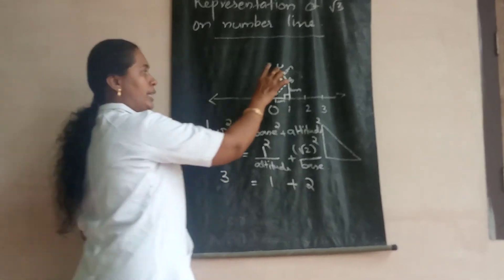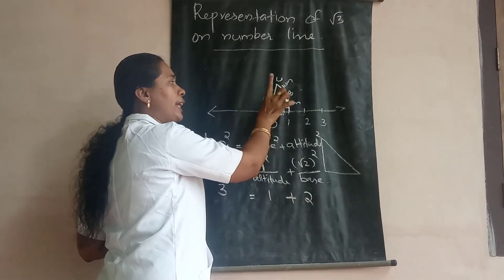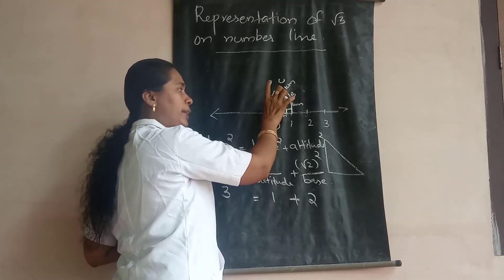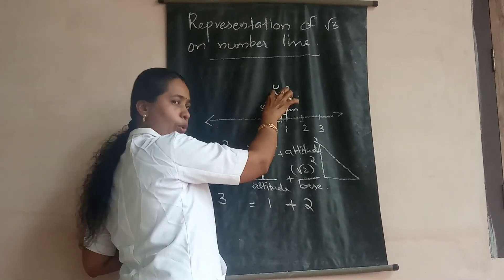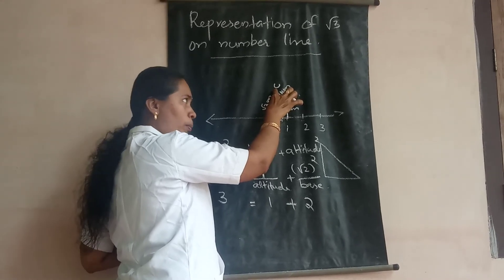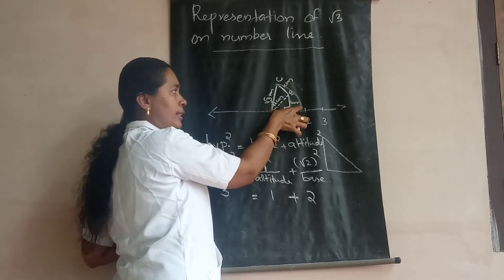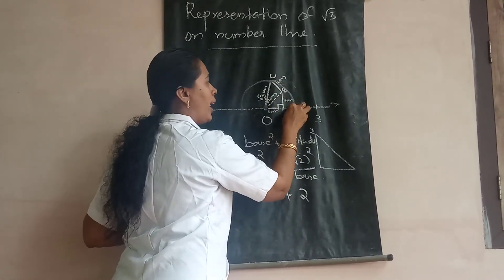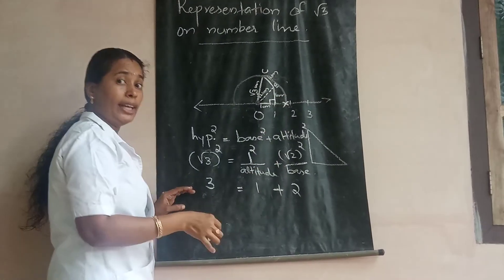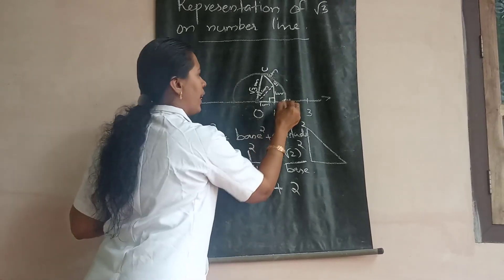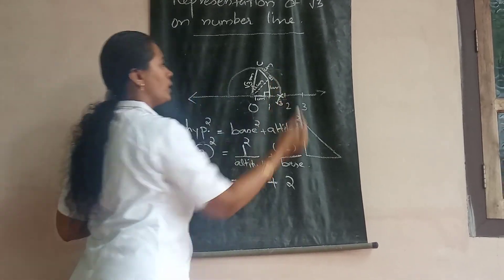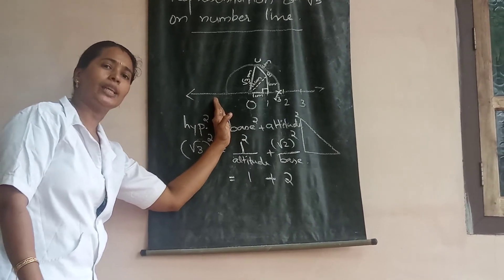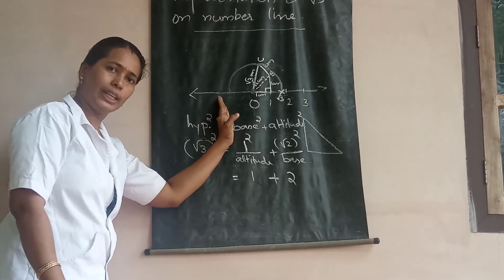Now, same as before: keep your compass needle at O, with radius OC. Draw an arc on the number line. This arc lands somewhat near to 2. This value is positive root 3 on the right side, and on the left side it is negative root 3.